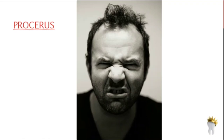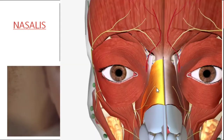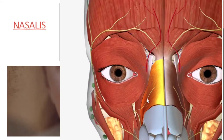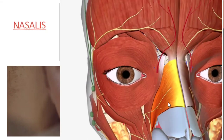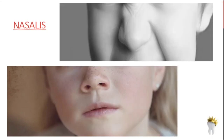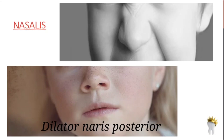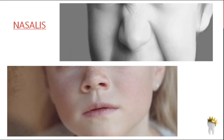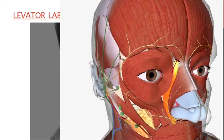The nasalis is a paired muscle covering the dorsum of the nose with two parts: the alar part and the transverse part. The alar part depresses the alar laterally and dilates the nostrils — called dilator naris posterior. The transverse part wrinkles the skin of the dorsum of the nose and compresses the nasal aperture, so it is called compressor naris.